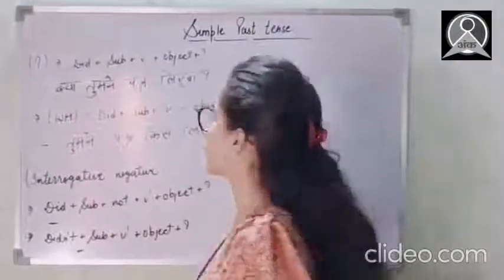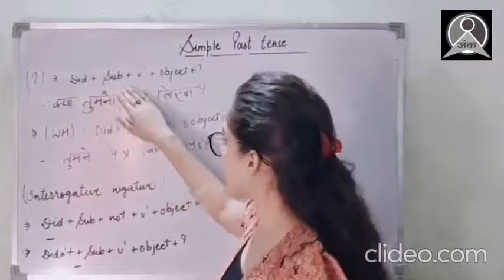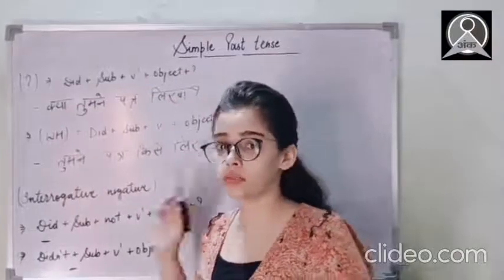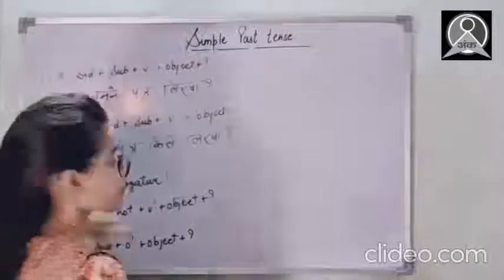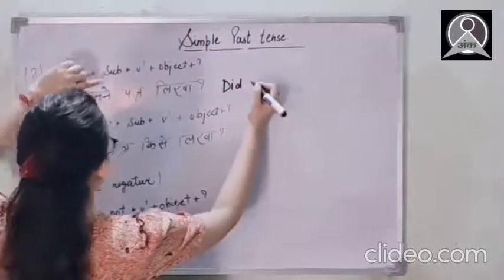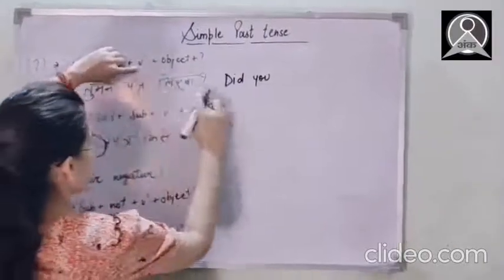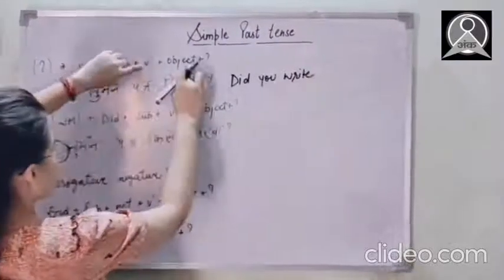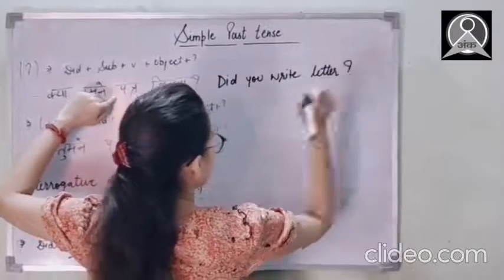Let's talk about the interrogative part. So here, the rule says, we have to put did first, then the subject, verb's first form, and then the object. Never forget the question mark. So let's have an example here. Kya tumne patr nahi likha? According to the rule, did subject tumne, did you, verb's first form likha, write object patr. Did you write letter? Question mark.